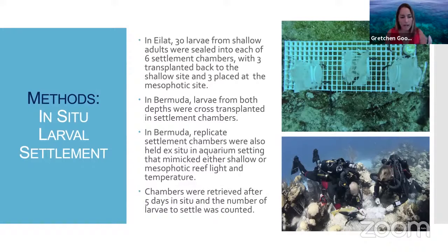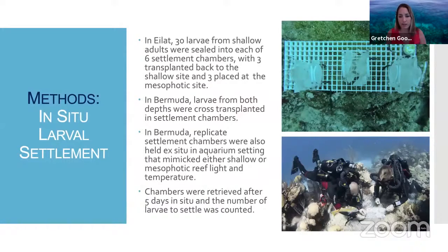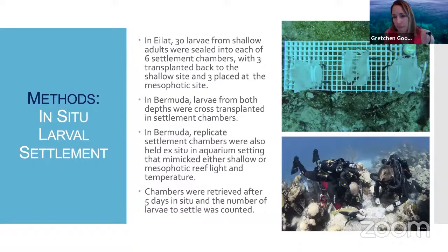In Eilat, we did not get enough larvae from deep corals to do a reciprocal transplant, so we only used shallow larvae settled at both shallow and mesophotic depths. In Bermuda, we had enough larvae for a full cross-transplant. We also repeated the experiment in the lab, which was extremely important because some of our settlement chambers were opened and we lost larvae. We are tweaking this methodology going forward, but we do have comparable ex situ mesocosm data for settlement in Bermuda.